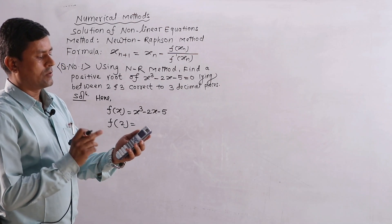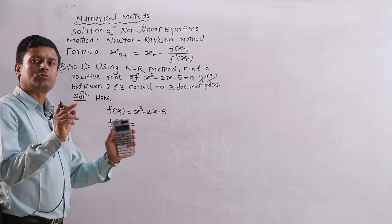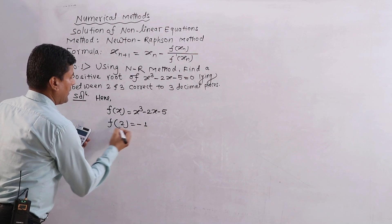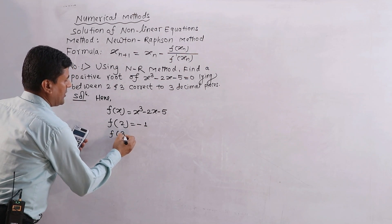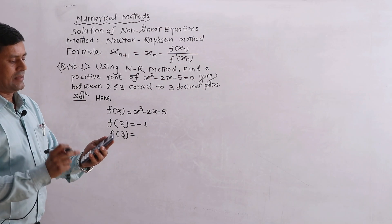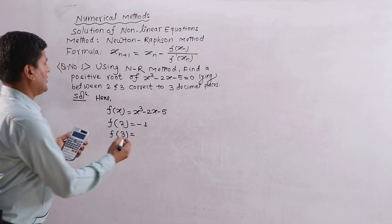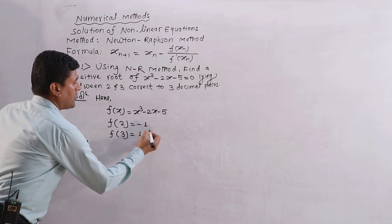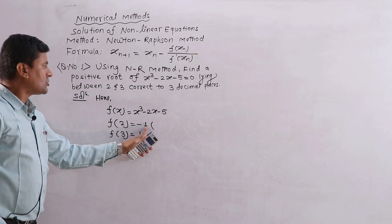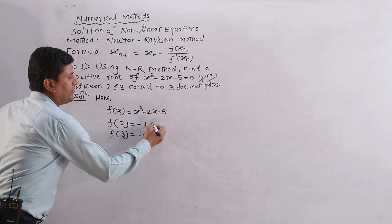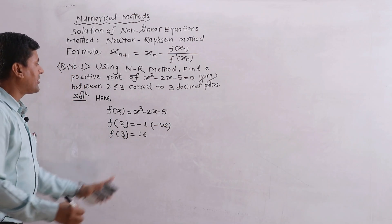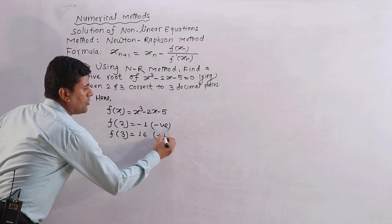Set the calculator equal to x = 2. The result is −1. Then set x = 3; the result is 16. So f(2) = −1 (negative) and f(3) = 16 (positive), confirming opposite signs, which means a root lies between x = 2 and x = 3.